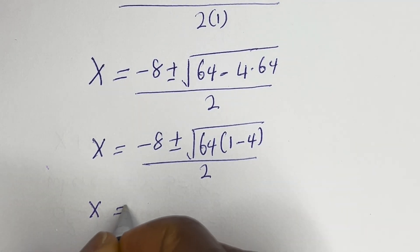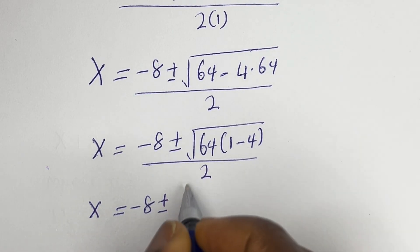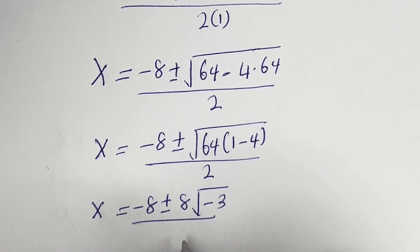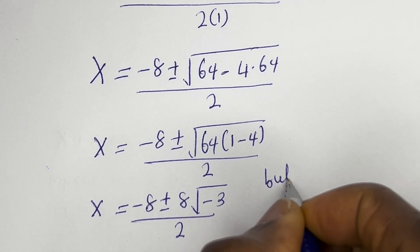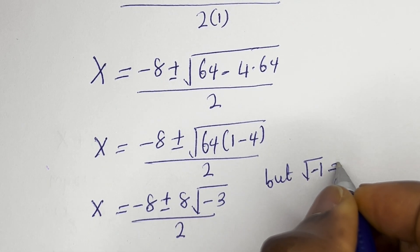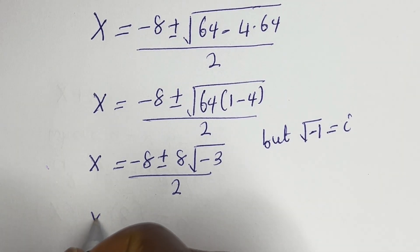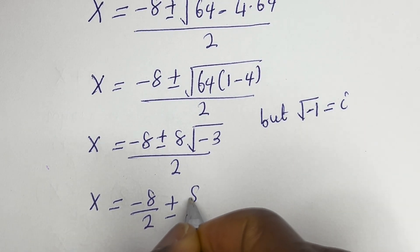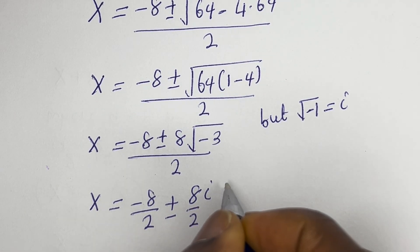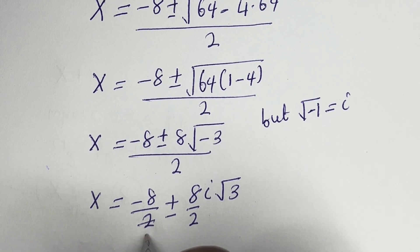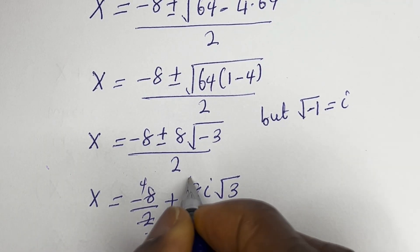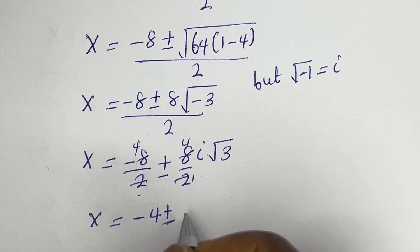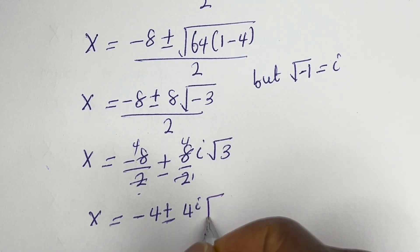So s equals minus 8 plus or minus 8 times square root of (1 minus 4), which is minus 3, over 2. Since square root of minus 1 equals i, we have s equals minus 8 over 2 plus or minus (8 over 2)i root 3. Therefore s equals minus 4 plus or minus 4i root 3. These are the other values of s from the second case.